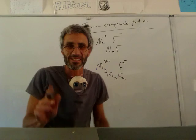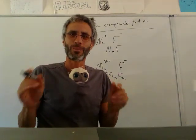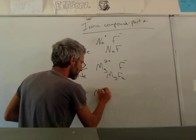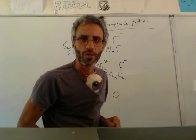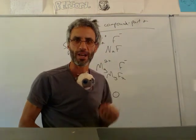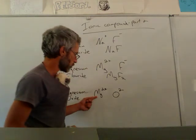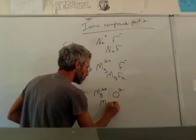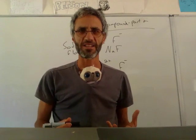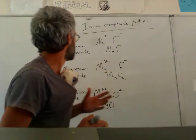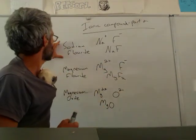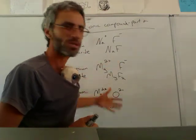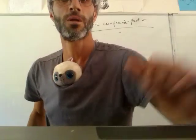Moving on to magnesium oxide. Magnesium is two plus. Oxygen is in the sixth group, which means it needs two more electrons — so it's two minus. Magnesium is going to give two electrons, and oxygen will receive two electrons. The formula is going to be MgO. That's pretty much what we did at the end of the last lesson. What I want to push here is understanding the word names — the English names — of these compounds.